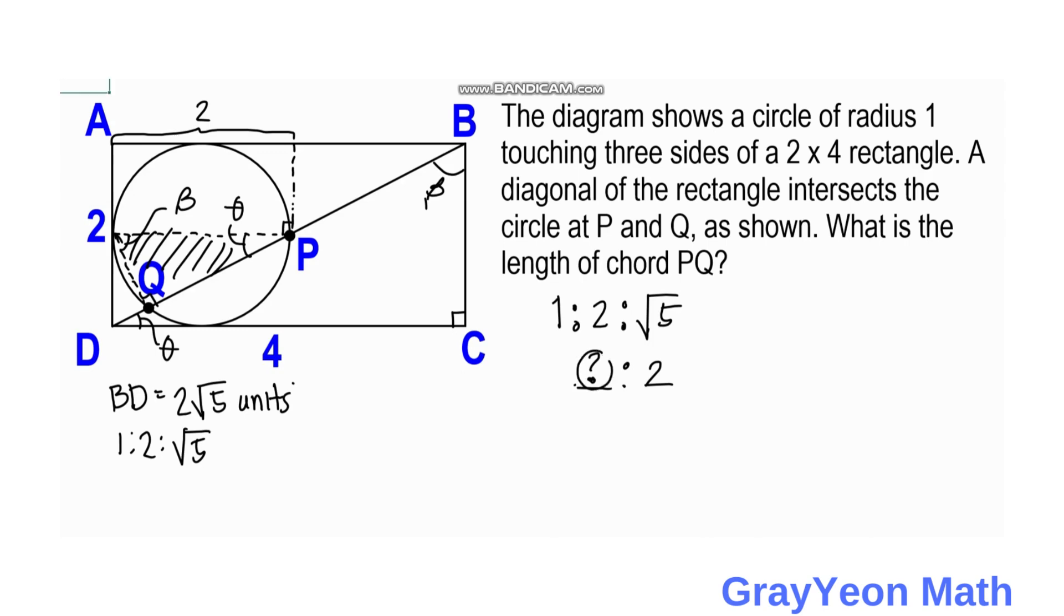If we make this as x, then we say that x over 2 is equal to 2 over root 5. And x is equal to 4 over root 5. If we cross multiply, then divide by root 5. Therefore, x is equal to 4 root 5 over 5, and that is our answer.